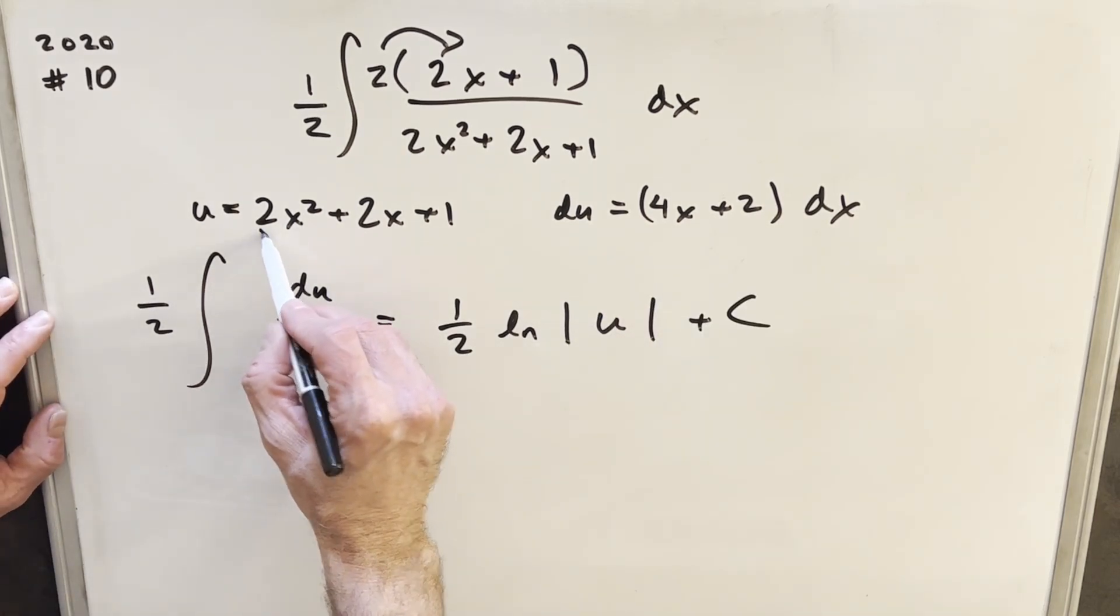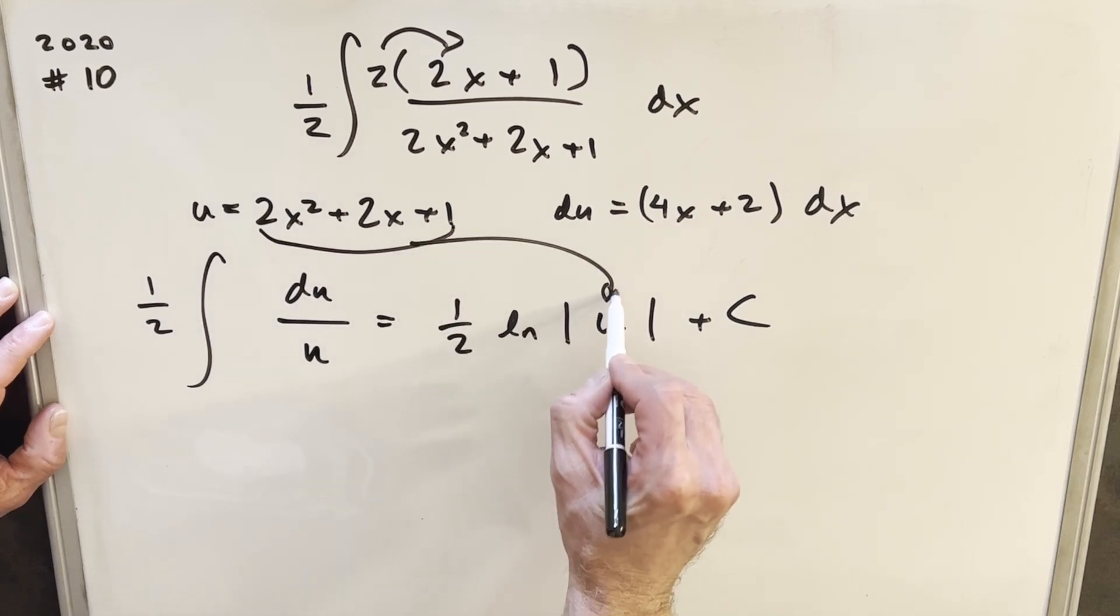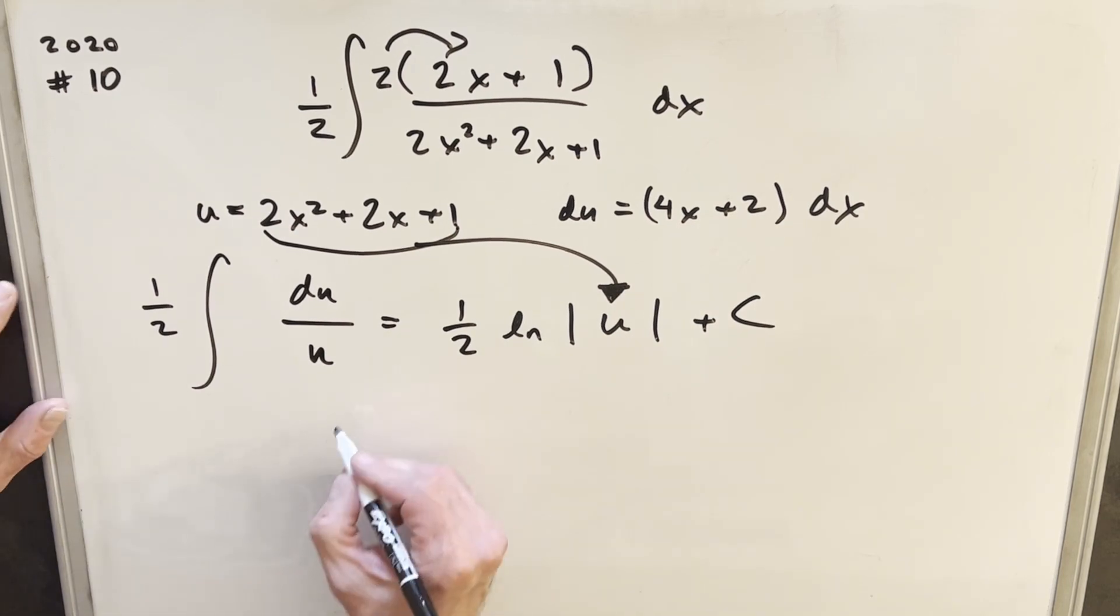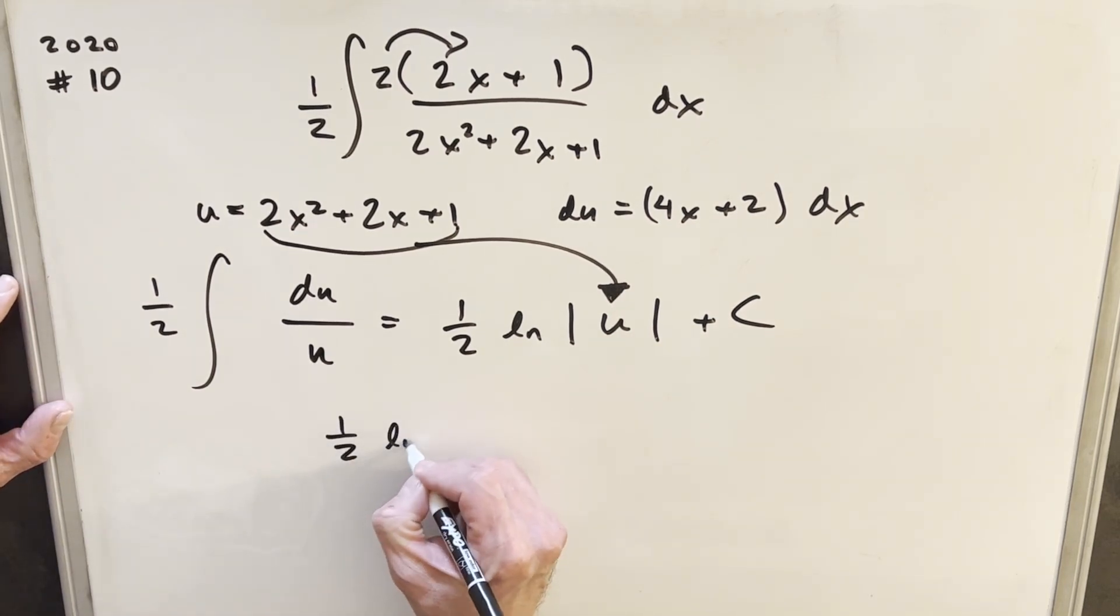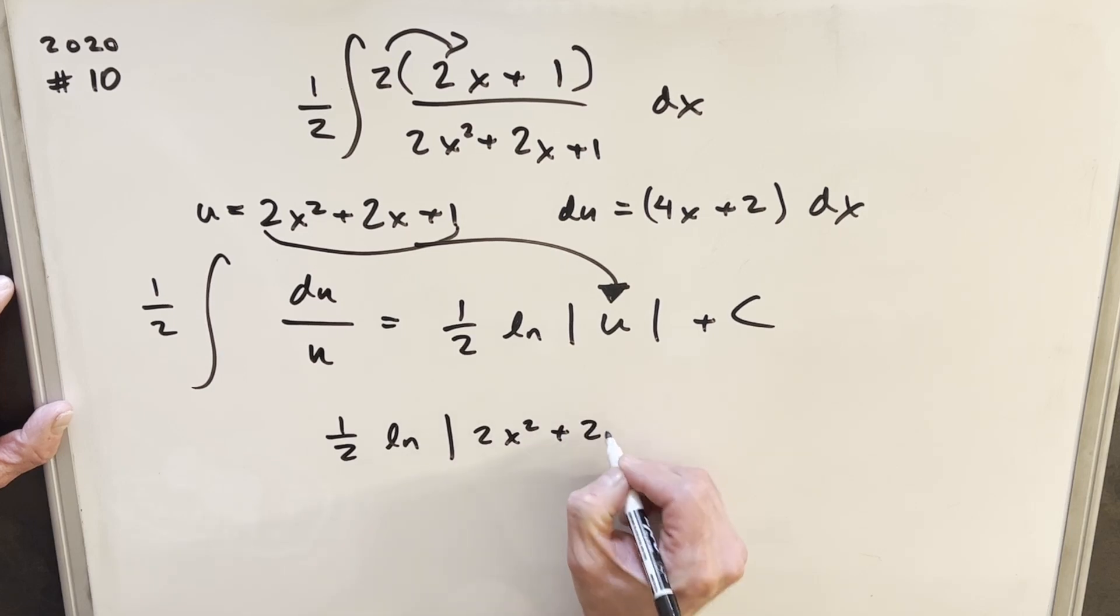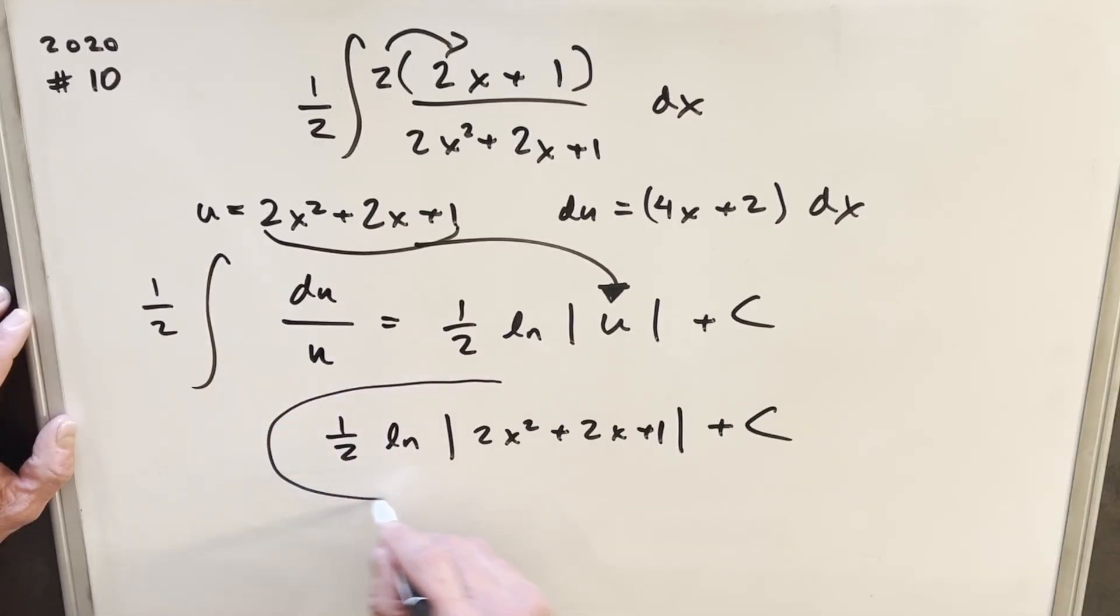Then all we need to do to finish this off, we're just going to back substitute here. And so our final solution is going to be 1 half natural log absolute value 2x squared plus 2x plus 1 plus c, and that's it. We're done.